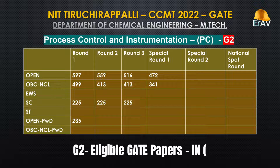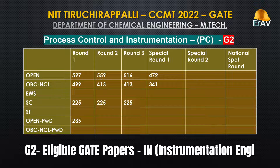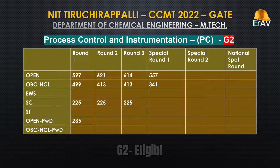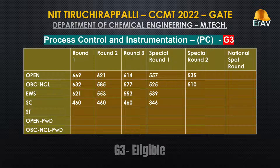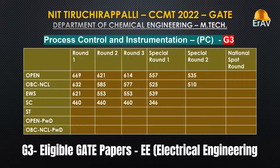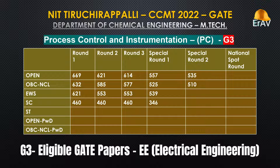Process Control and Instrumentation — Group 2: Eligible GATE Papers: Instrumentation Engineering (IN). Group 3: Eligible GATE Papers: Electrical Engineering (EE).